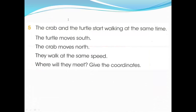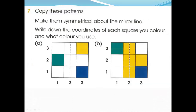Next, question number 7. Copy these patterns and make them symmetrical about the mirror line. Write down the coordinates of each square you colored, and what color you see. So let's start from A.